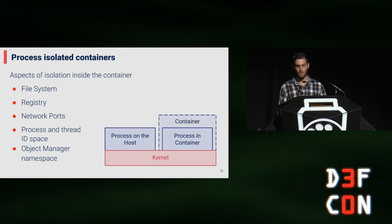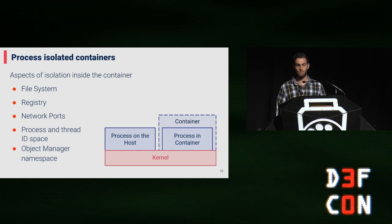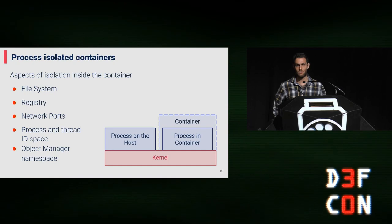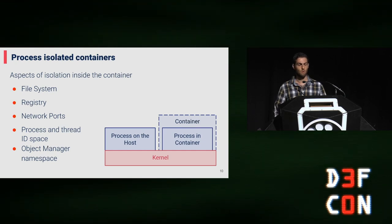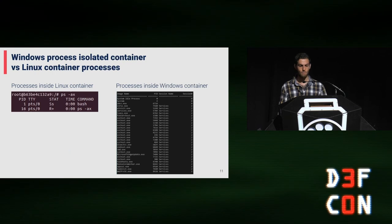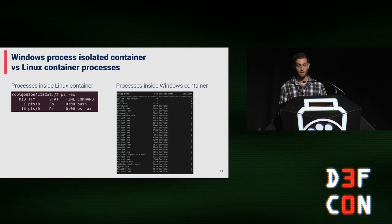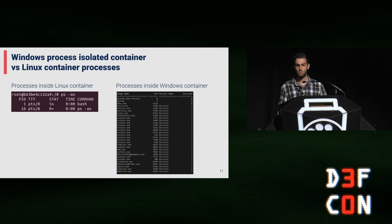The goal of the isolation is to prevent the container from being able to impact the host. Because the kernel is shared between the container and the host, some validations were added to the kernel to block a container from doing activities that can impact the host. In this presentation, I will focus only on process isolated containers. When running task list inside a Windows container, we will see lots of system processes which are related to the OS itself.